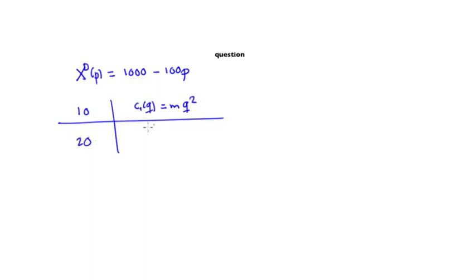And there are 20 firms for whom the cost function is given by 2MQ squared, where M greater than 0 is a parameter reflecting the current state of the technology and therefore affecting the costs.